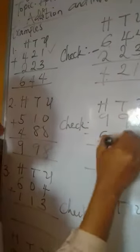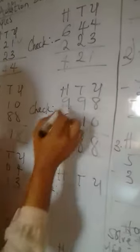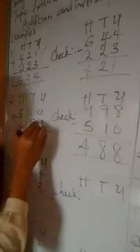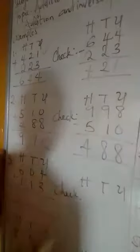Now, how do I check? I will use my answer, 998 minus 510. 8 minus 0 is 8, 9 minus 1 is 8, 9 minus 5 is 4. So you have seen that I have gotten all of these answers. So this is correct.